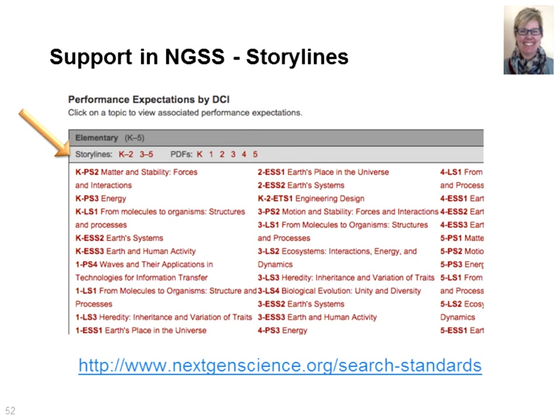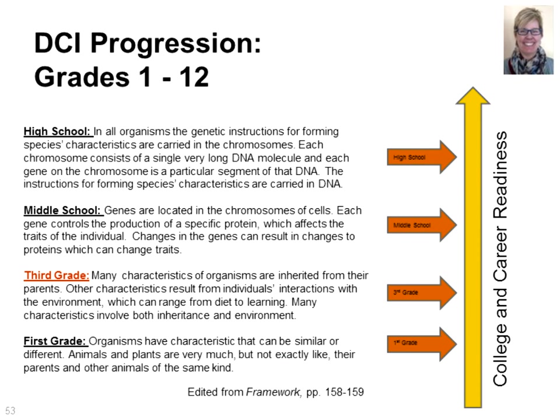We've also pulled a lot of information from the storylines for grades 3-5, available at nextgenscience.org. The storylines are great resources because they provide an overview of the individual disciplinary core ideas. One of the key features of the Framework for K-12 Science Education is the progressions across grade levels — this is really important for thinking about instruction.